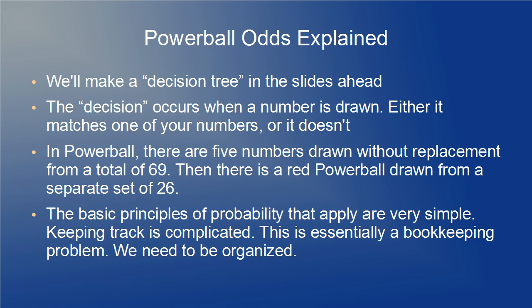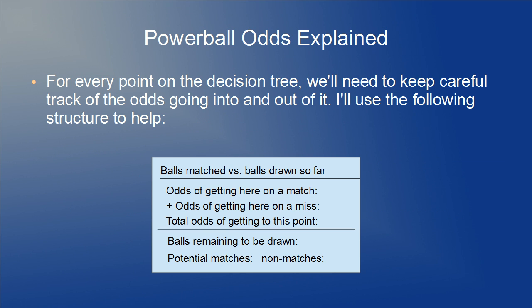In the slides ahead we will use a decision tree. The decision occurs each time a number is drawn — either it matches a number you selected or it doesn't. In Powerball there are 5 numbers drawn without replacement from a total of 69, and then there is a red Powerball drawn from a separate set of 26. The basic principles of probability that apply are very simple; keeping track is complicated. This is essentially a bookkeeping problem, so we need to be organized. For every point on the decision tree we will need to keep careful track of the odds going into and out of it.